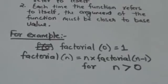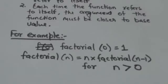For arguments which are greater than 0, factorial function refers to itself. And each time factorial function refers to itself, value of argument is decreased by 1. It gets closer to base value.